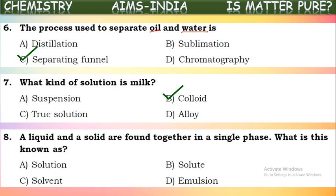A liquid and a solid are found together in a single phase — what is this known as? When they exist in a single phase, for example when common salt is dissolved into water, no solid is seen after mixing; the solid and liquid come to one state — the liquid phase. The mixture in which the components come into a single phase is called a true solution, or simply a solution.